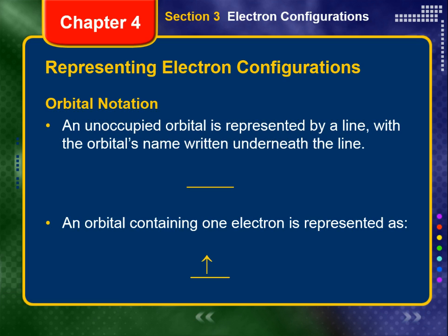In a ground state hydrogen atom, the single electron is in the lowest energy orbital, the 1s orbital. The electron can be in either one of its two spin states. Helium has two electrons, which are paired in the 1s orbital.